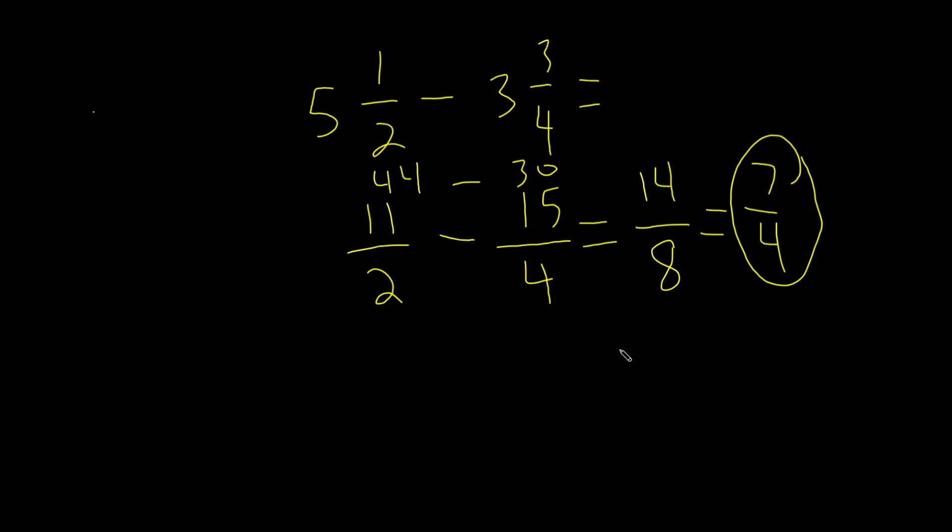This can actually be converted into mixed number form. If you haven't already, go watch our video on converting improper fractions into mixed numbers. So let's write this right here, 7 over 4, and this equals, well, what's the most amount of times 4 can go into 7 with it being less than 7?